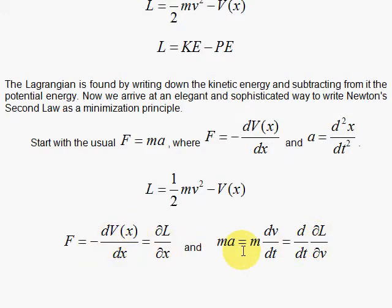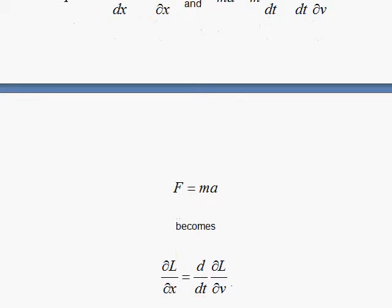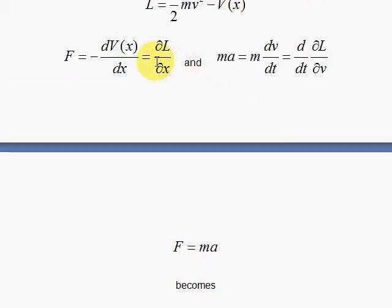You set that equal to the force, so we're finished. And if the m is constant, you can pull it out and have ma. So this is a way to write Newton's law in terms of derivatives with the Lagrangian. You set these two equal.